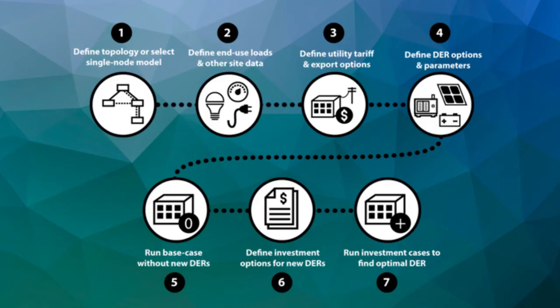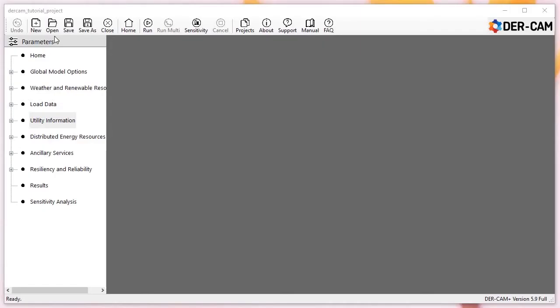The next step in the workflow is to define DER options and parameters. For this use case, we're just going to use default cost and performance data for each DER, so we won't modify any tables within the distributed energy resources menu. With these inputs set, our next step is to run a reference case, which represents the project site before any new DER investments. Since we have no existing DERs to define for this case study, we just need to save our project, then run the model.